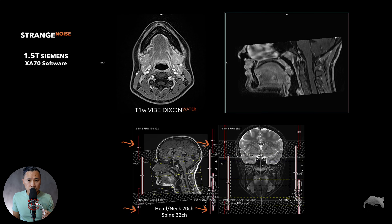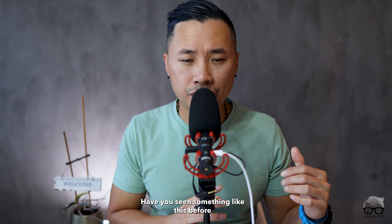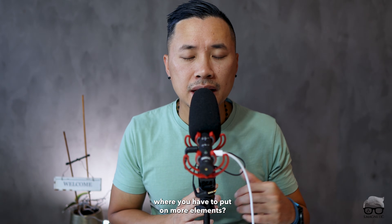I know that people who are doing dynamic protocols click on more elements to gain more SNR. That's a tip I have for you today. I hope this video is valuable. Nonetheless, if something like this occurs, think about the coil elements. Last thing I want to say before we close up — have you seen something like this before where you had to put on more elements? If so, let me know in the comment section down below.